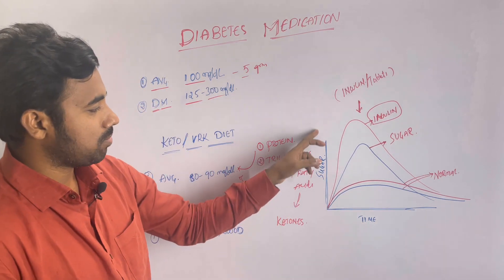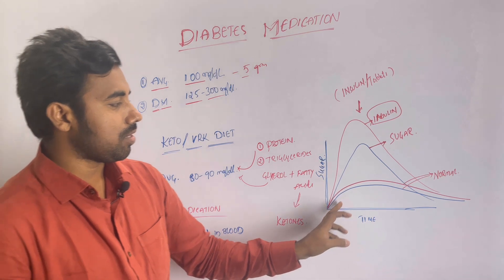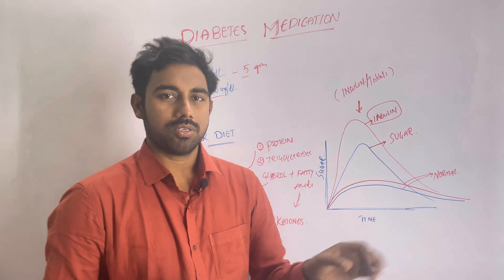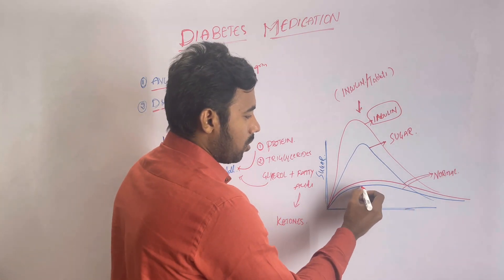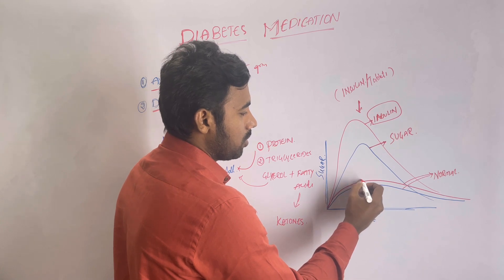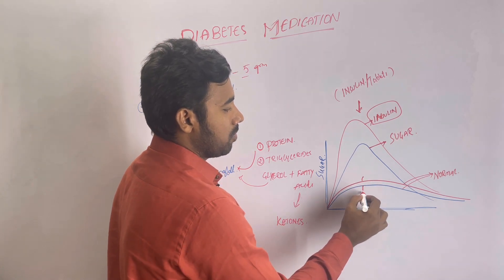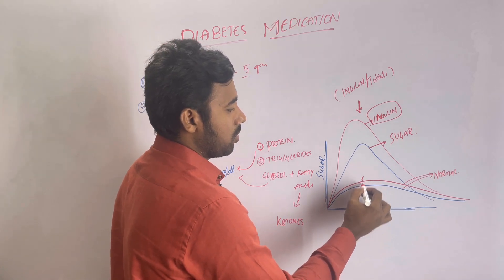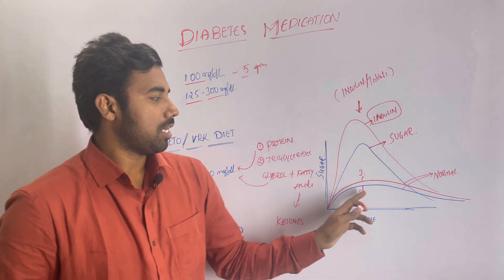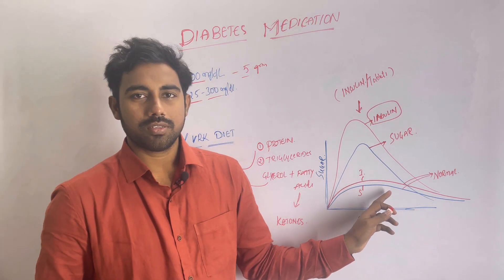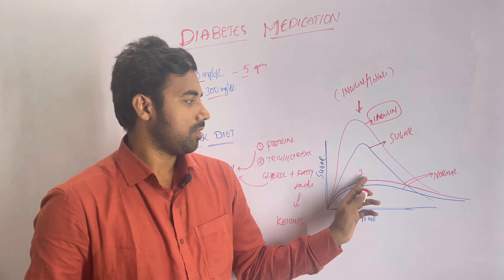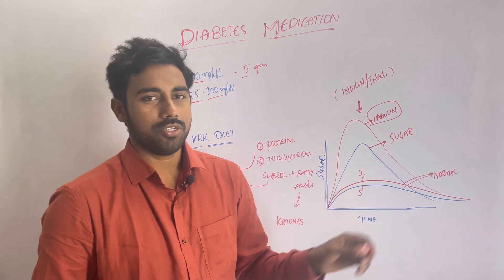For example, if you look at this graph for normal people, the blue color represents sugar and this line represents insulin. This sugar and insulin relationship — if you look at normal people with normal sugar, you see normal insulin levels.